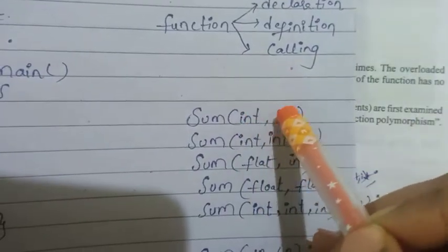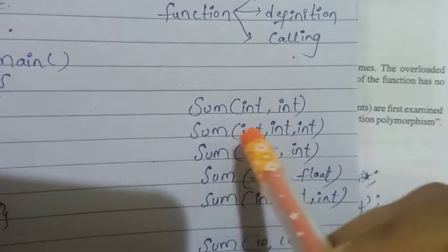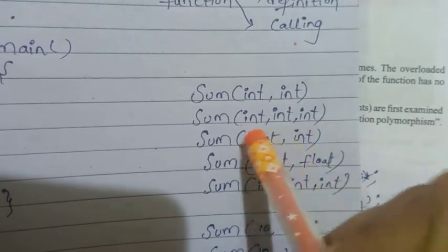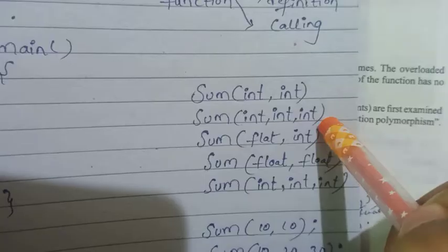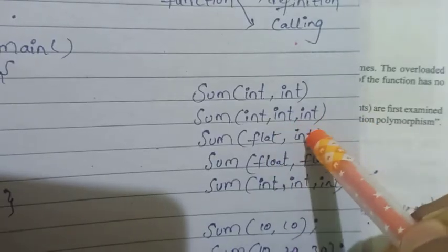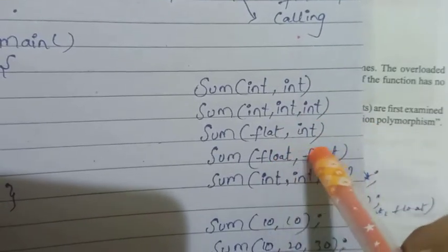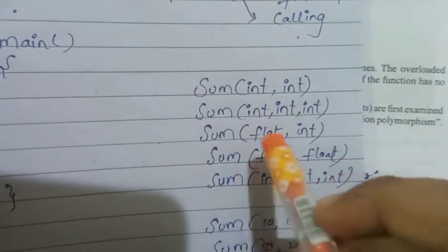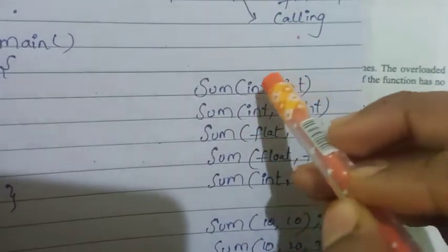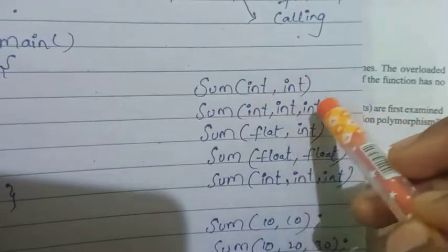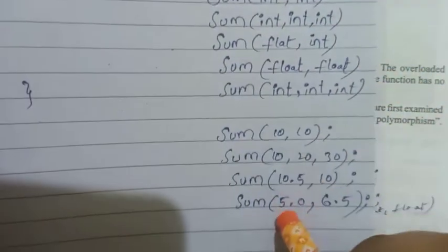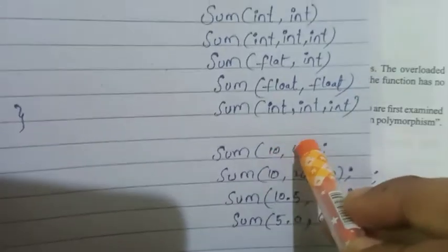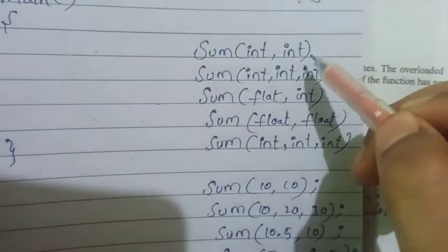The argument types can also differ — for example, integer type in one function and float type in another. So we use the first data type as integer, and the second as float, giving different argument types. We can have two integer arguments, or an integer and a float, and so on. Let's call these functions.